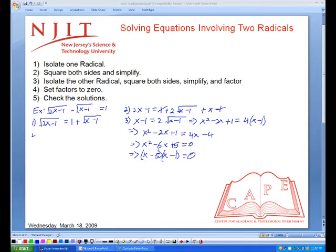And then the fourth step, setting everything to 0, setting all terms to 0, gives us x equals 5 and x equals 1. So x equals 5 or 1.